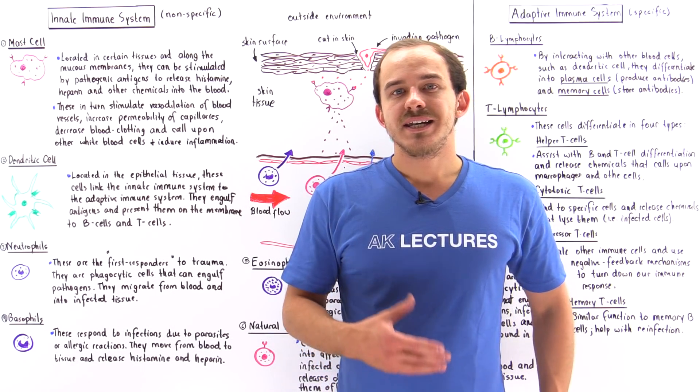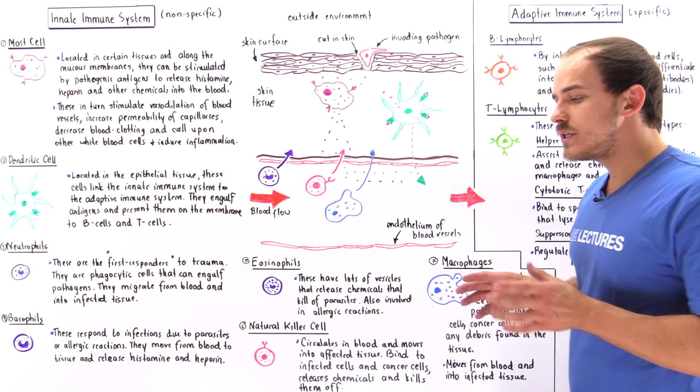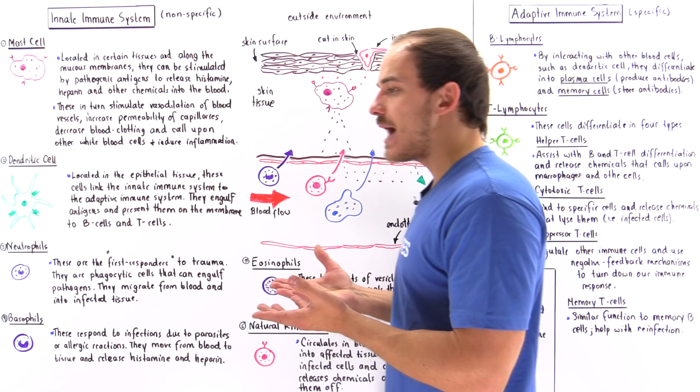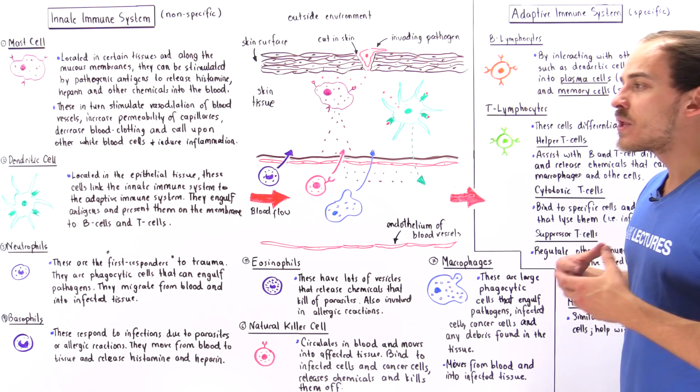Now that we discussed the many details of our immune system, let's actually connect the dots. Let's describe how the innate immune system interacts with the adaptive immune system and how they work together to carry out the function of protecting and defending our healthy cells of the body from different types of pathogenic infections.